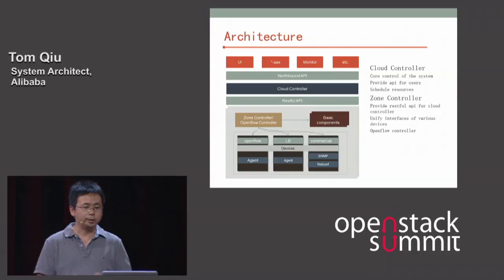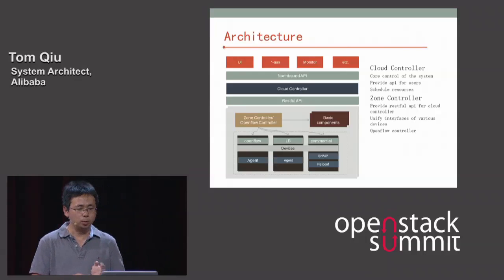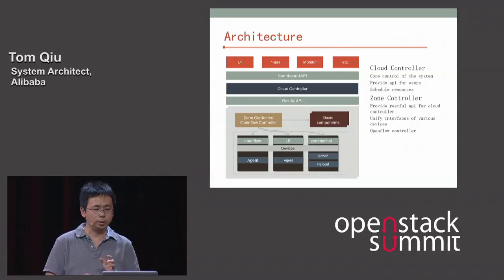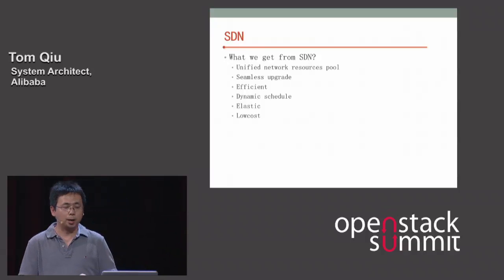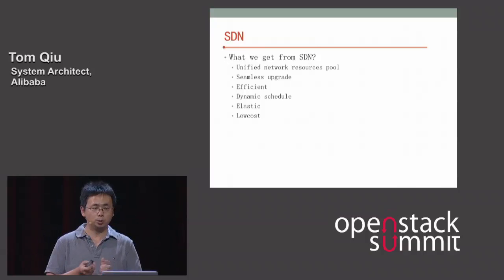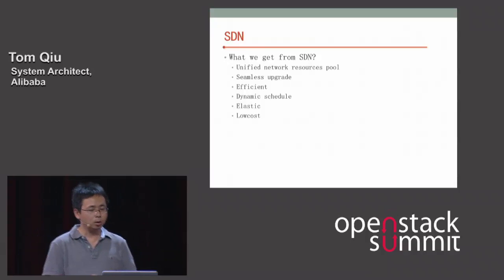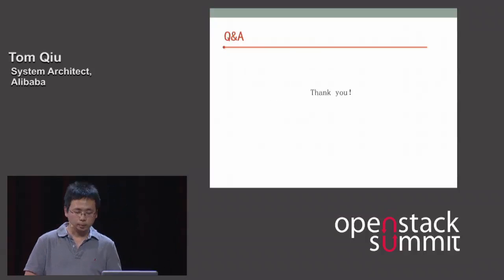This is the technical architecture of our network platform — also a layered structure. The cloud controller is the core component, providing a northbound API to upper-layer systems. The zone controller is responsible for controlling devices in its own zone, which can include conventional devices, OpenFlow devices, load balancers, and others. We believe SDN can unify network resources, enable seamless upgrades, and dynamically schedule network resources to promote efficiency, giving us an elastic network. This is all a work in progress and we are doing our best. Thank you.